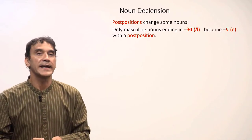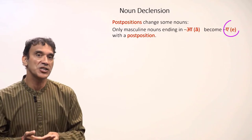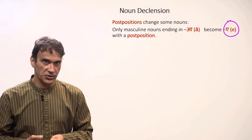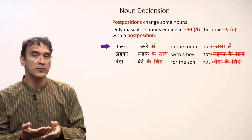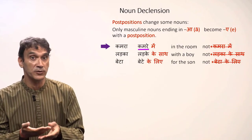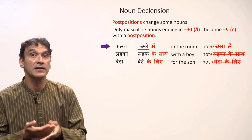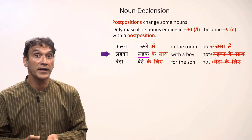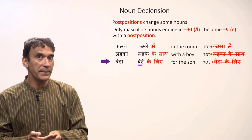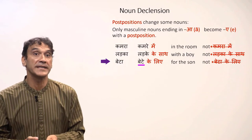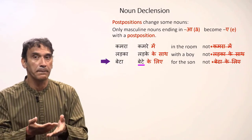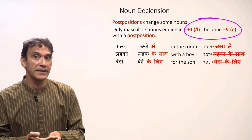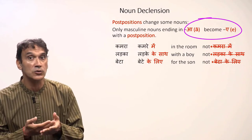In Hindi, masculine nouns that end in 'a' decline — their ending 'a' changes to 'e' with a postposition. Other nouns do not change. For example: 'kamra' (a room) becomes 'kamre' — 'kamre mein' means 'in the room.' 'Ladka' (a boy) becomes 'ladke' — 'ladke ke saath' means 'with a boy.' 'Beta' (son) becomes 'bete' — 'bete ke liye' means 'for the son.'